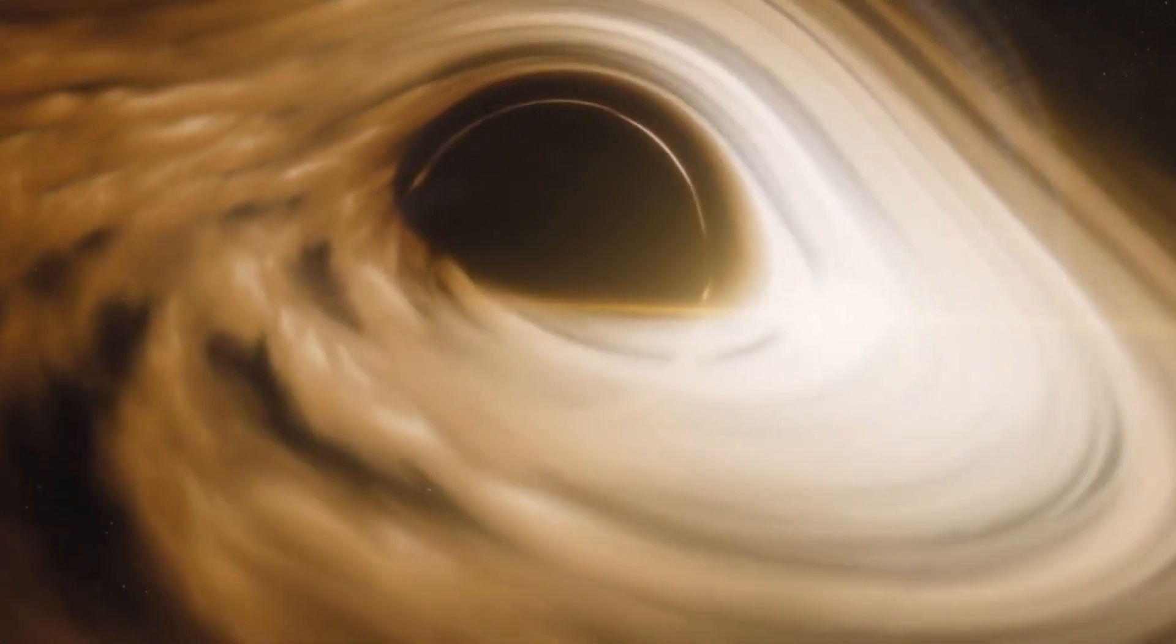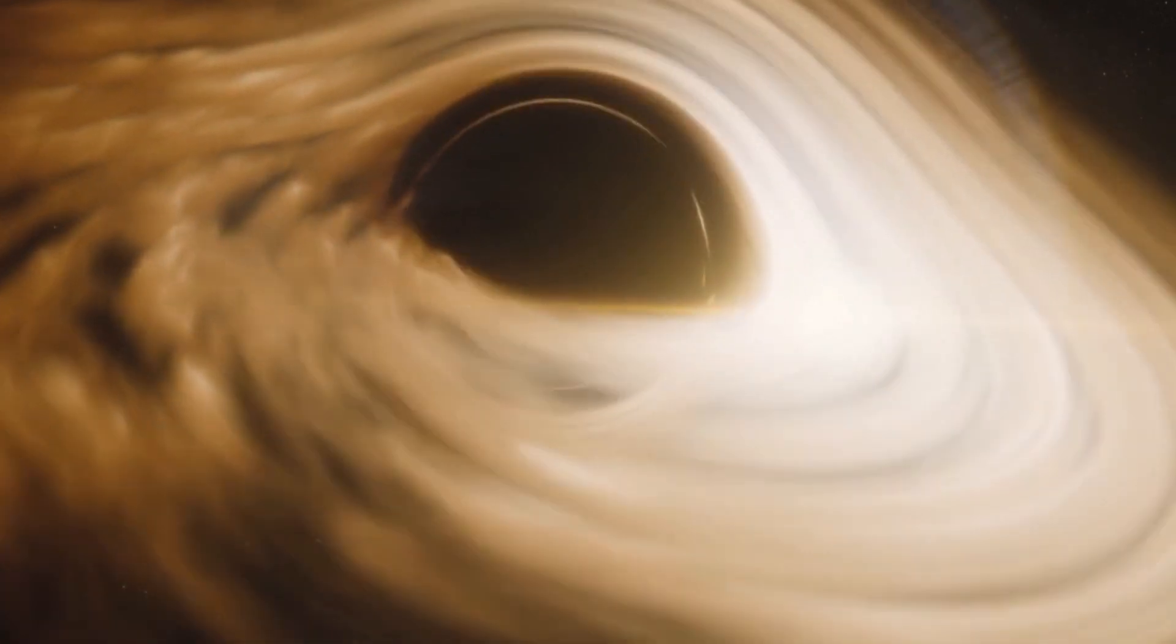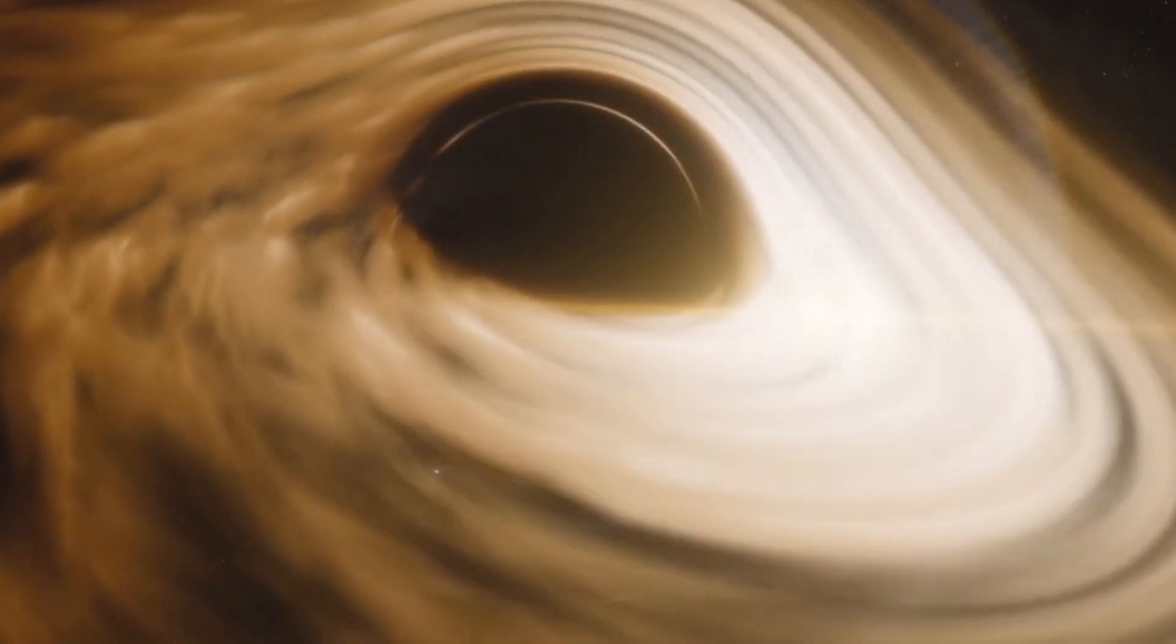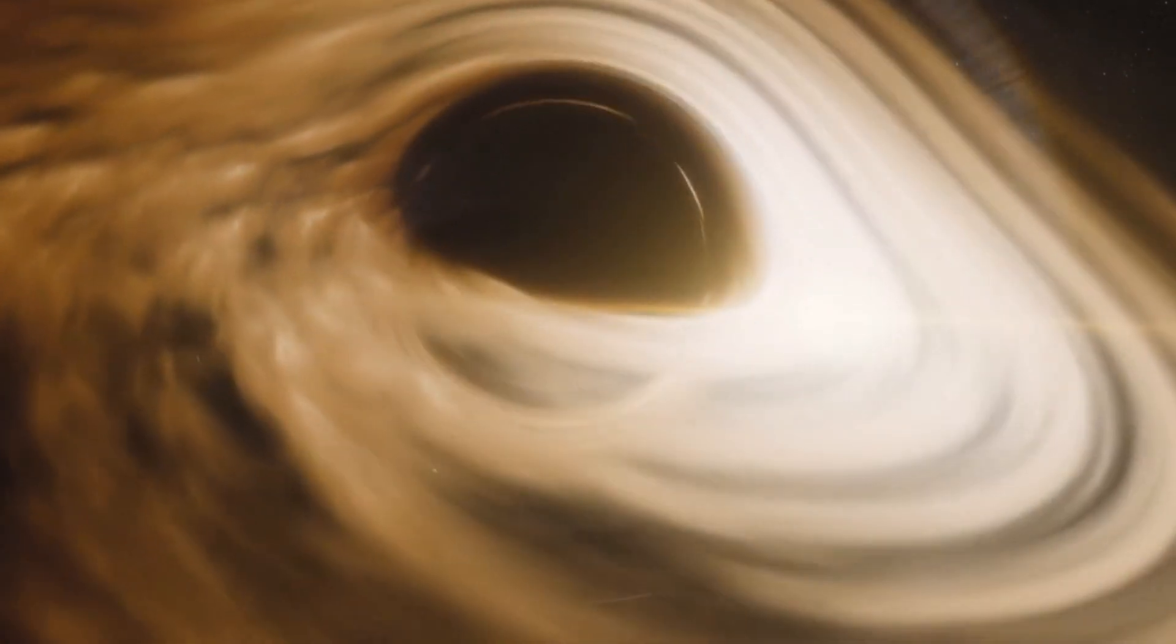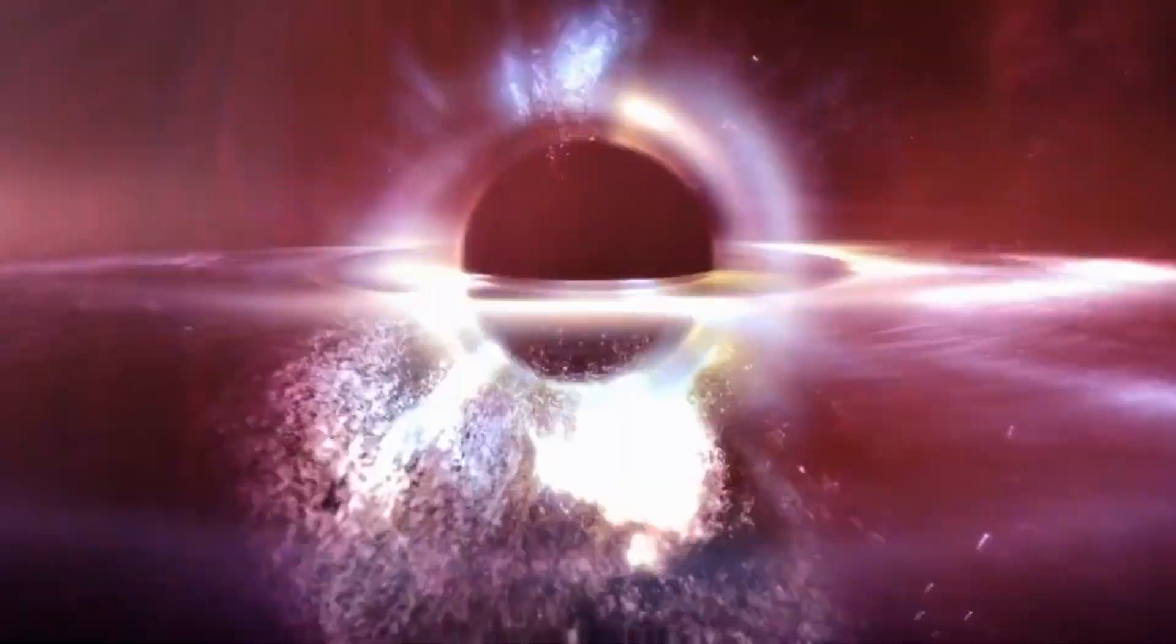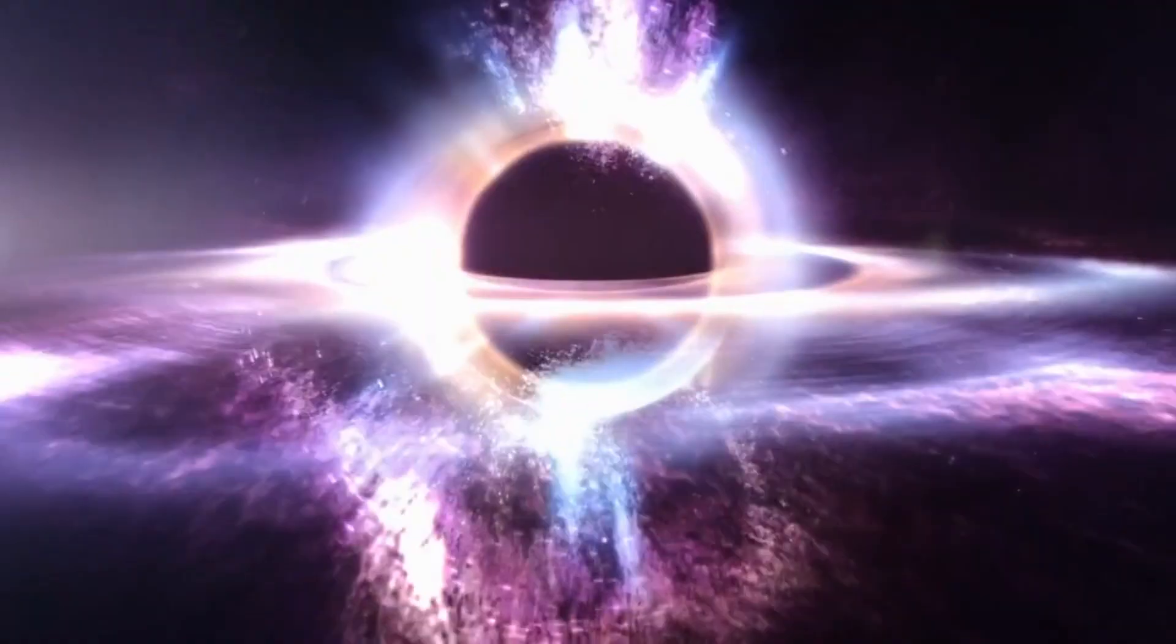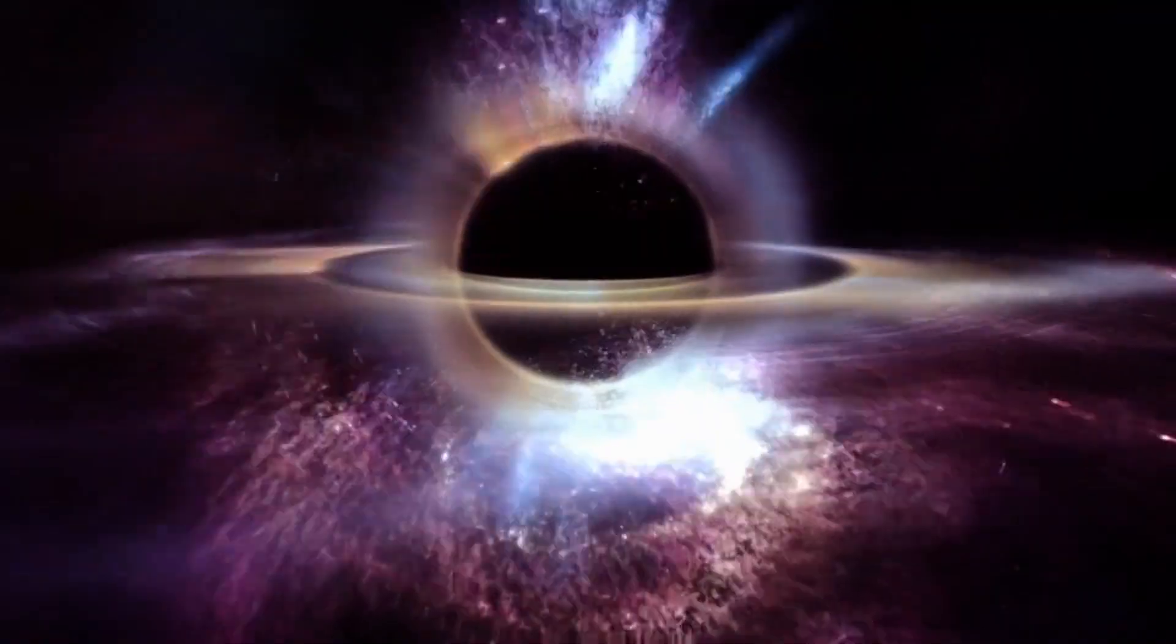But first, let's recall what a black hole is. A black hole is a region of space where gravity is so strong that nothing, not even light, can escape from it. The boundary of this region is called the event horizon, and it marks the point of no return for any matter or radiation that crosses it.